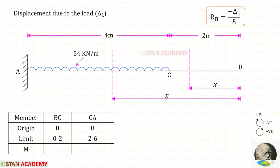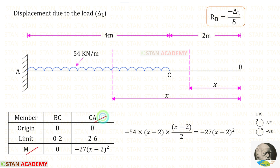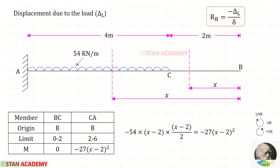Now we are going to find the moment M, taken from point B, following the left-hand side rule — clockwise negative, anti-clockwise positive. For BC, there is no load up to this section, so M equals 0. For CA, there is a UDL of 54 kN/m acting in the clockwise direction, so it is negative. The distance is (x minus 2), and after simplification we get M equals minus 27 into (x minus 2) squared.